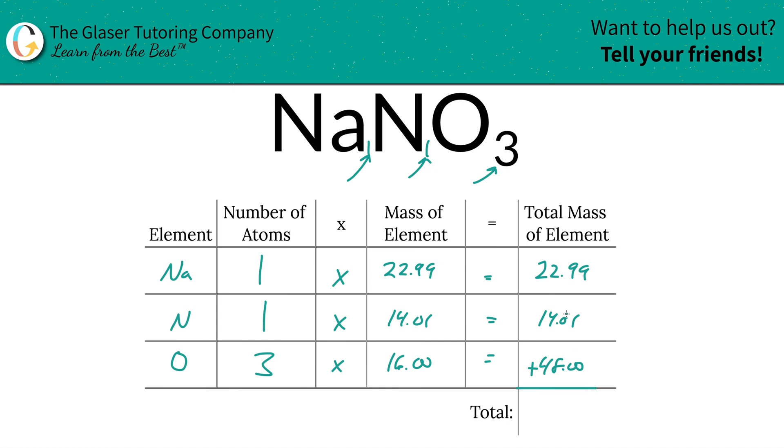Then to find the total mass of the entire thing, just simply add this column up, and the total mass here works out to be 85. And that's grams per mole because we're solving for molar mass. Now you know how to find the molar mass of sodium nitrate.